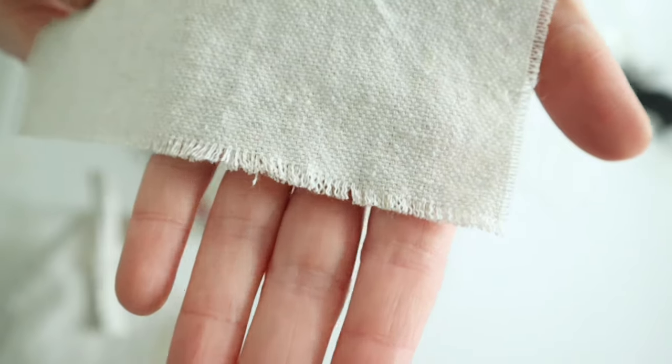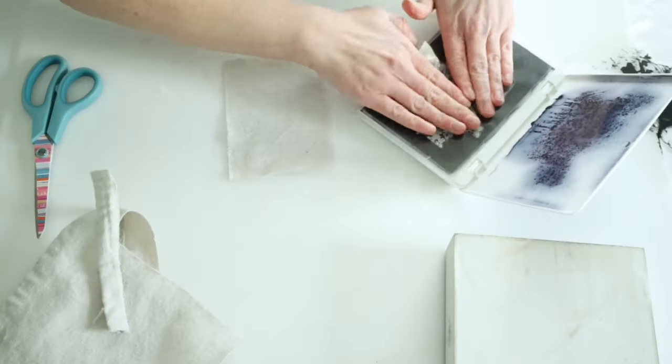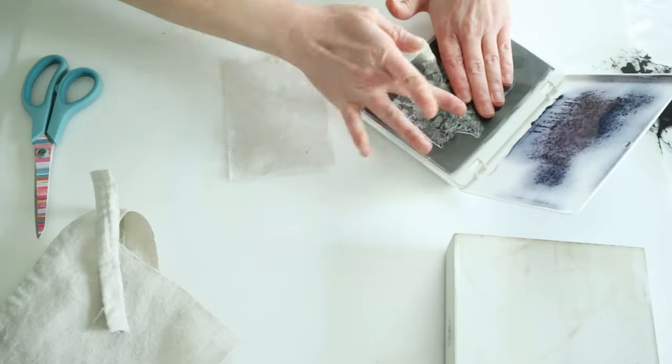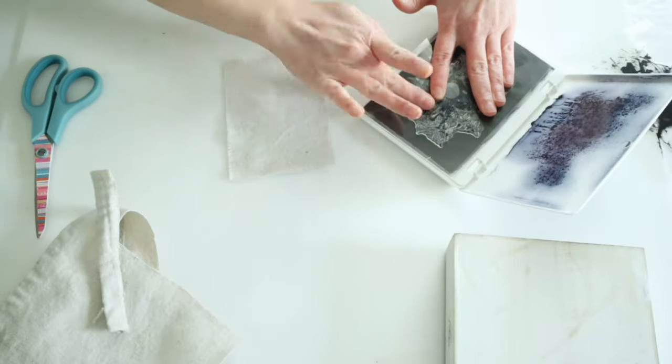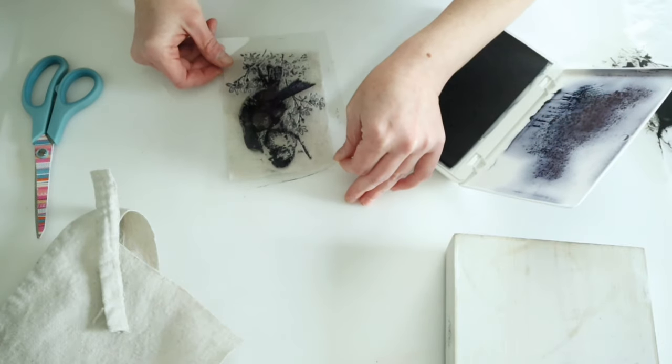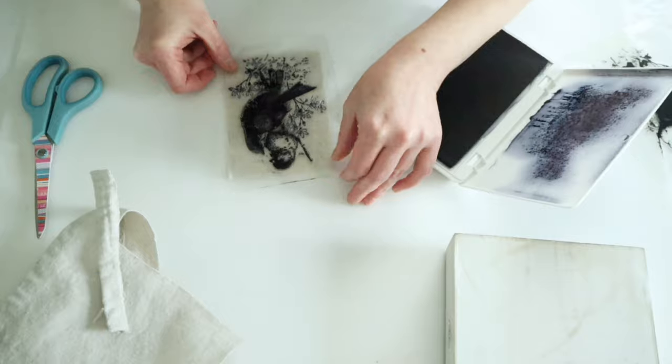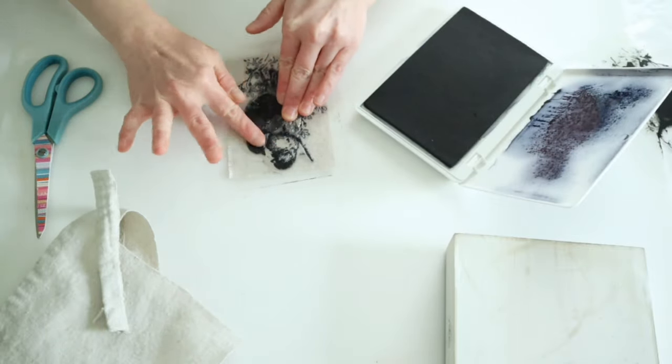I'm just going to cut down a piece of my drop cloth to fit that stamp, and then I frayed the edges a little bit. I'm going to be using some of my archival ink to stamp this piece of drop cloth, and I'm making sure that I am pressing this down really nicely so that I can get all those little details onto the fabric.